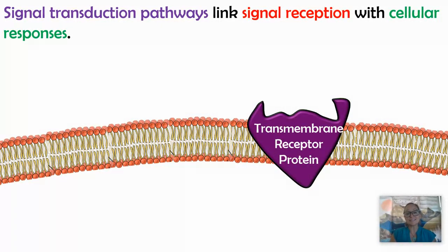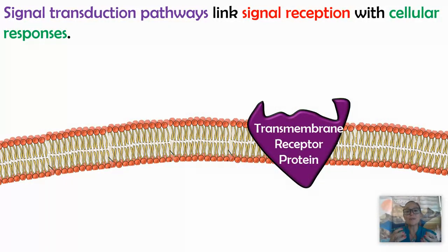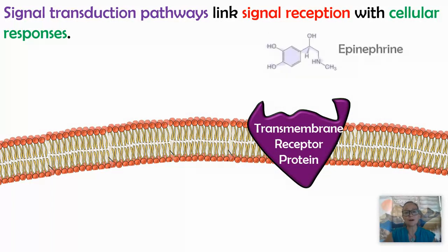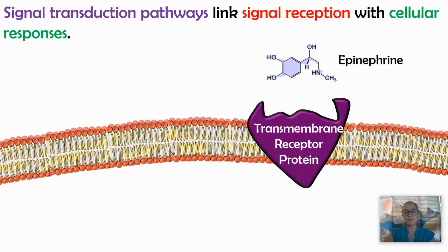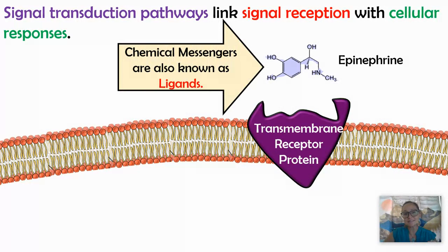Ligands have two different properties: protein-based ligands and lipid-based ligands. Regardless of the ligand, when it reaches its target cell, it's going to bring about a cellular response — there's a reason for the cells communicating. In this video, we're going to focus on ligands that are protein-based attaching to receptors found within the cell membrane.